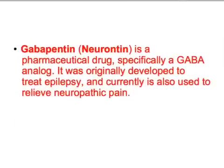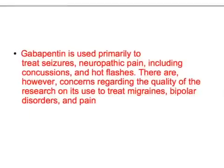I will be discussing here the important points only. Gabapentin, or Neurontin — the most commonly used term you'll hear in your residency program — is a pharmaceutical drug, specifically a GABA analog, so this increases the GABA effect. It was originally developed to treat epilepsy and is currently also used to relieve neuropathic pain. Gabapentin is used primarily to treat seizures, neuropathic pain including concussions, and hot flashes.